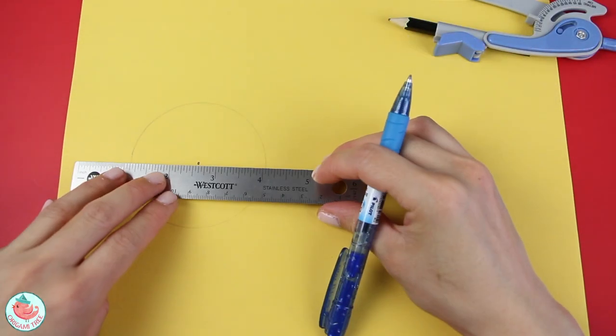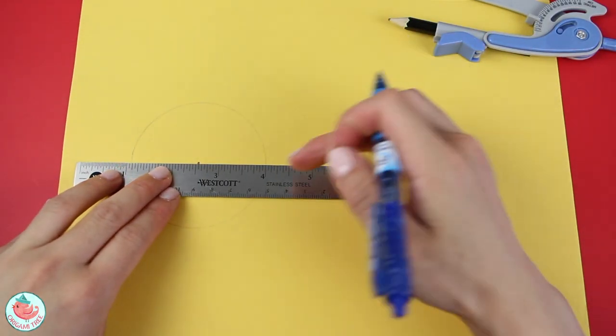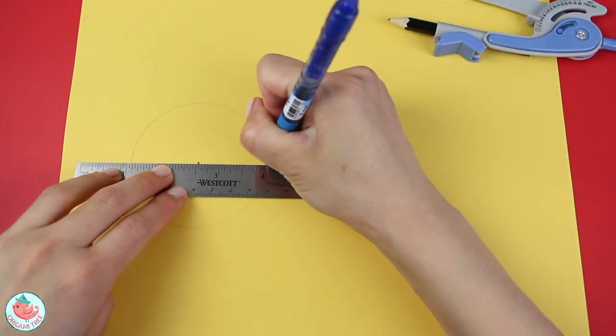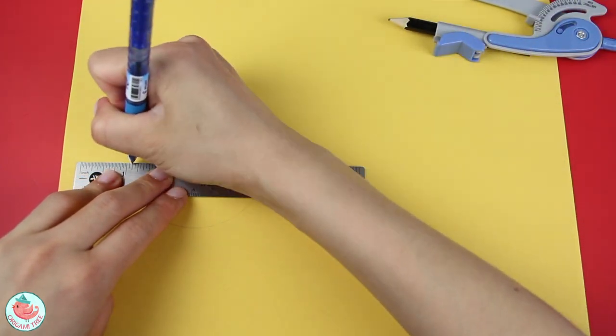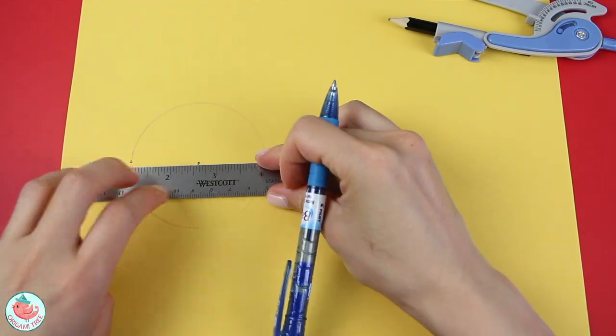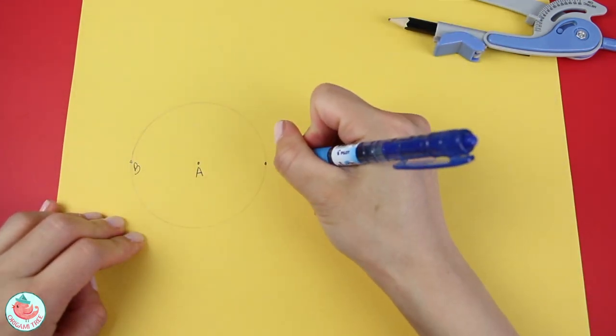Next, you're going to take your ruler and place it at the center of the circle at point A. And then you're going to mark off this point over here where it intersects, and this point over here where it intersects. And I'm going to call this point B and point C.